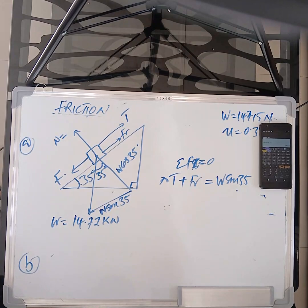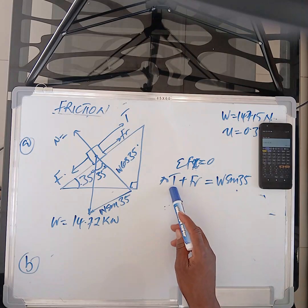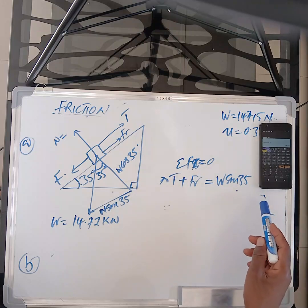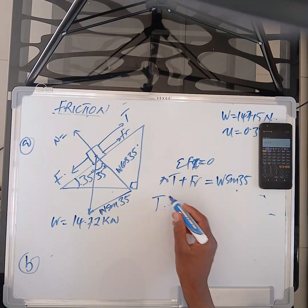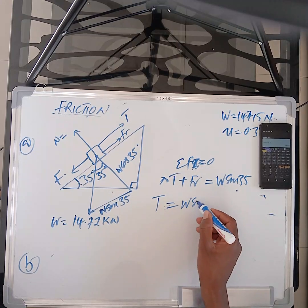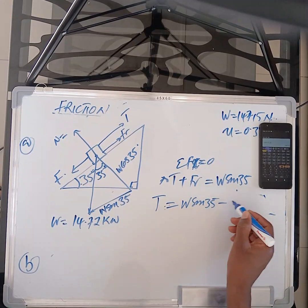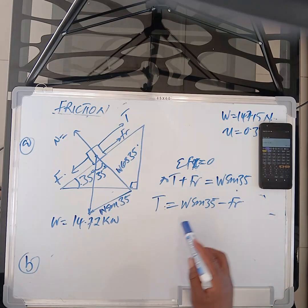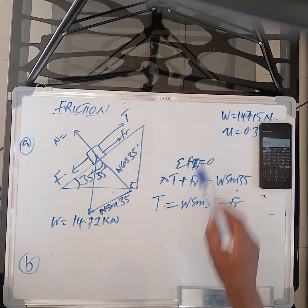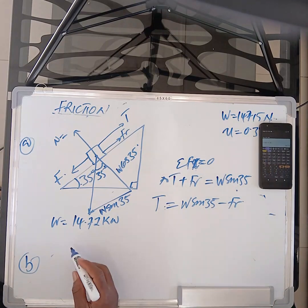So now, let's begin our solving. T is what we are looking for. So it's very good that we take this one, the other side. I think that should make a lot of sense. So we are going to have T is equal to W sin 35 minus FR. Now, our duty here is to find FR because we already have W. It's there.